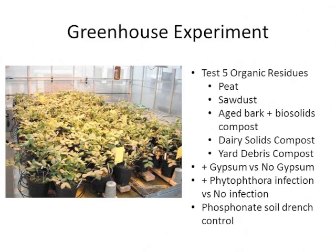I ran a greenhouse experiment testing five different organic residues, based on the theory that adding organic matter enhances cellulase activity. I tested peat — which would theoretically have no cellulase-promoting effects — sawdust, aged bark plus biosolids compost, dairy solids compost, and yard debris compost. Each organic residue was tested with and without gypsum, and all of that with and without Phytophthora. We also had a phosphonate soil drench as a control.